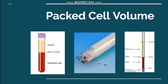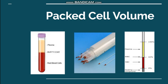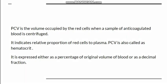In this video we will discuss packed cell volume or hematocrit. Whenever we get an EDTA sample of blood and centrifuge it, the volume of the red blood cells is the packed cell volume — the hematocrit. It is the volume occupied by the red blood cells when a sample of anticoagulated blood is centrifuged. It tells us the relative proportion of red blood cells to plasma, and the unit of expression is percentage.